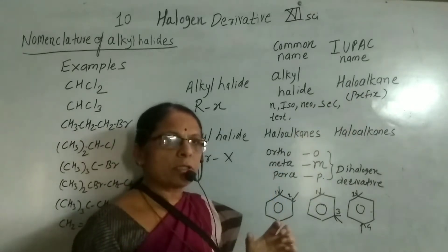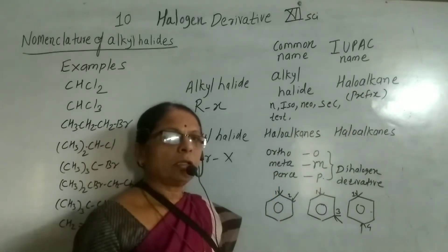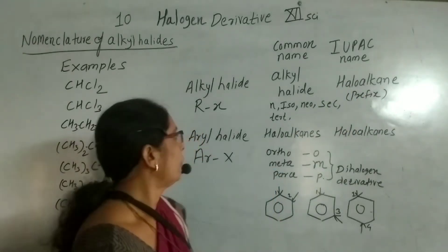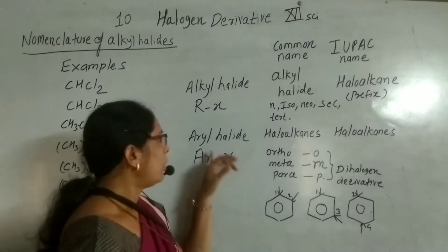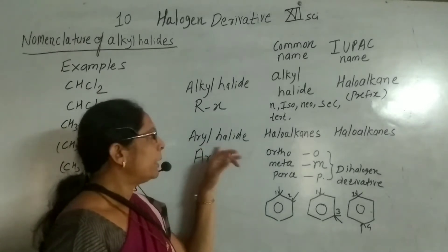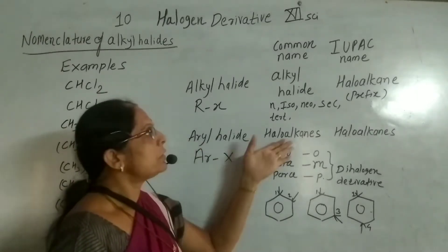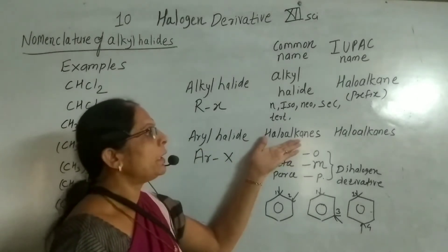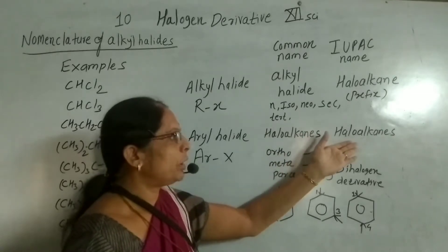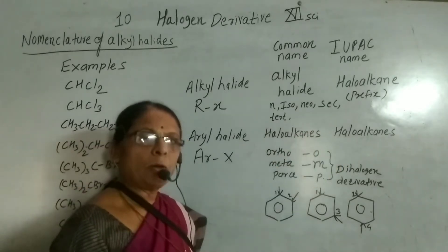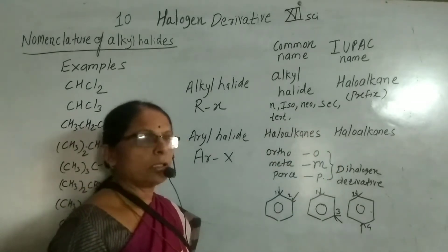In the nomenclature of aryl halides, whether you consider the common name or IUPAC name, in both cases the name given is as a haloarene.